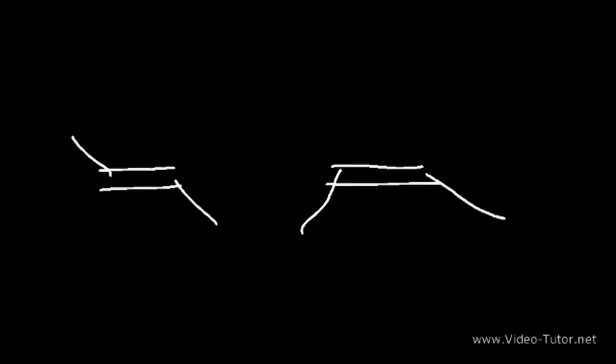So these two would be cis-trans geometric isomers. On the left we have the trans isomer — this is trans-2-butene. On the right, cis-2-butene.